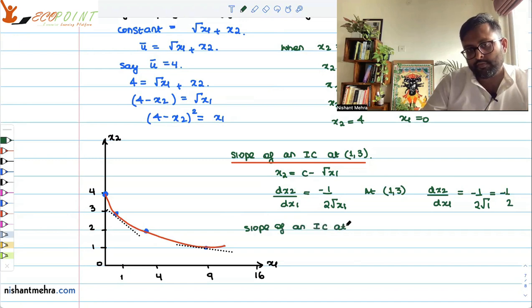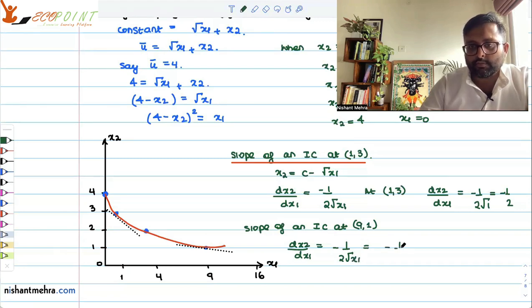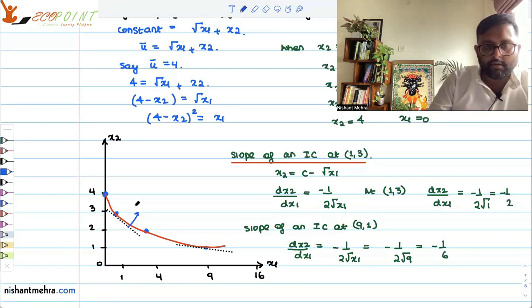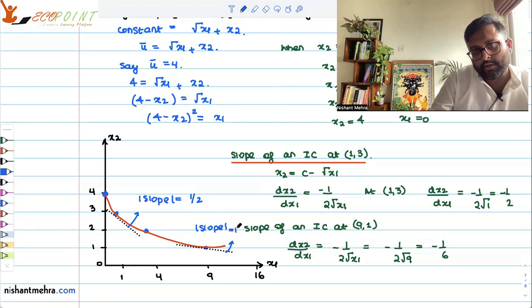Slope of an indifference curve at (9,1). So dx2 by dx1 is minus 1 upon 2 root x1. So it is minus 1 upon 2 root of 9. So it is minus 1 upon 6.